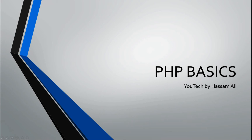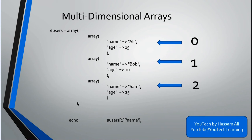Welcome to the next lecture. I'm Hassam from Utech Academy. In this lecture we will discuss multi-dimensional arrays in PHP. A multi-dimensional array is an array that can consist of one or more arrays inside it. In our example we have three arrays inside one main array. The main array is called the parent array — here that is 'user' — and inside this we have three arrays, each with its own properties and values.